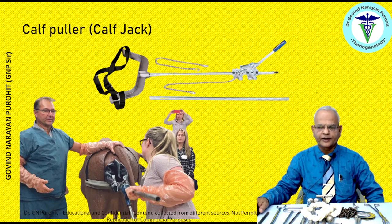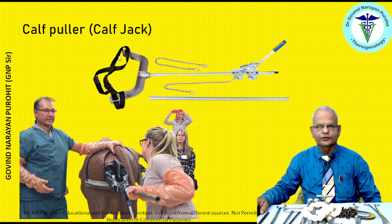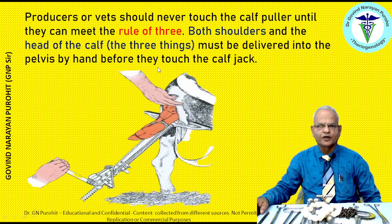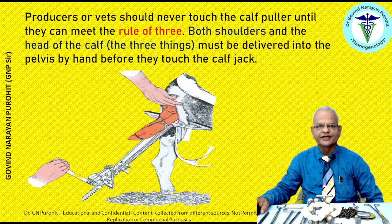The calf puller or calf jack has two ends applied to the legs of the fetus. There is a lever system — when you press the lever, the jack moves and pulls the fetus tied to the two cuffs of the calf puller. It is always stated that producers or vets should never touch the calf puller until they can meet the rule of three: both shoulders and the head of the calf — these three things must be delivered into the pelvis by hand before applying the calf jack.